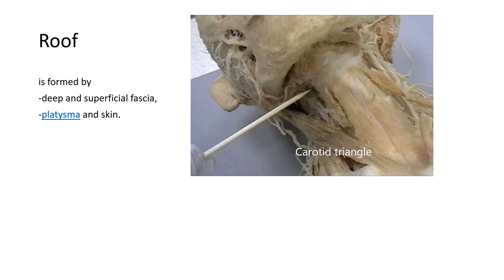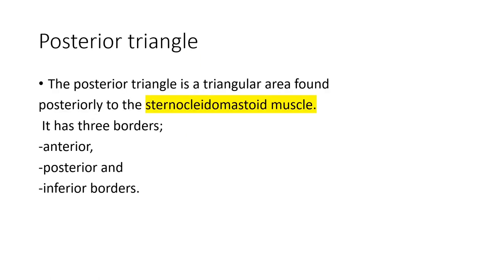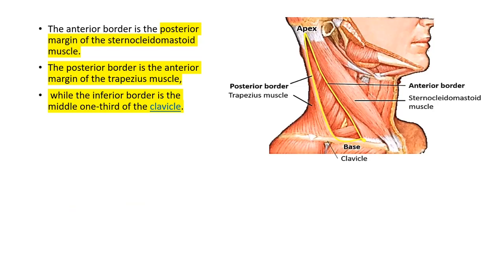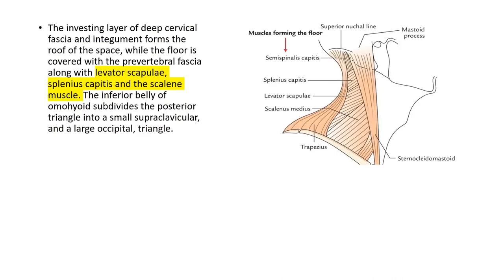The roof of the carotid triangle is formed by deep and superficial fascia, platysma, and skin. For the posterior triangle again: the anterior border is the posterior margin of sternocleidomastoid, the posterior border is the trapezius, and the inferior base is formed by the middle one-third of the clavicle.